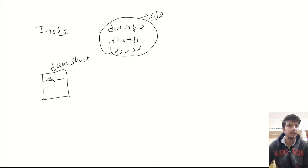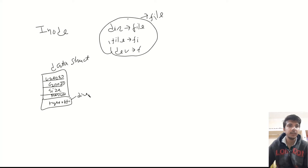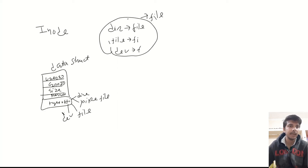For example, the data structure contains who is the owner of the file — the user ID — and similarly the group ID. It also contains the size, the permissions, and the type of file. The type could be either a directory, which is a normal file, or whether it is a pipe file — I will describe pipe files later in this tutorial — or it is a normal file or a device file. So basically, the data structure contains various metadata information regarding the file.